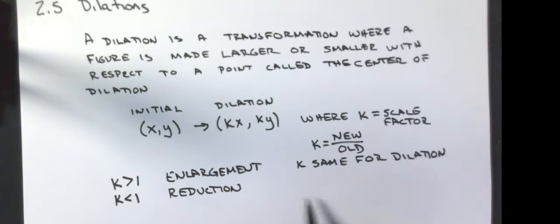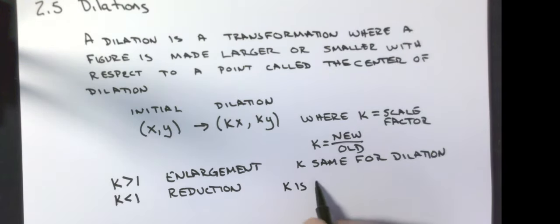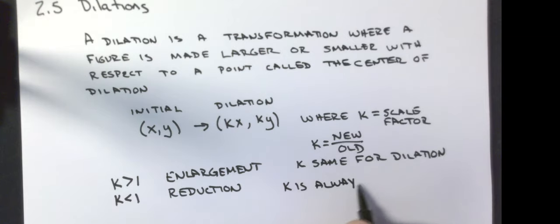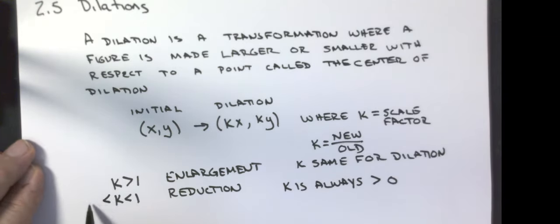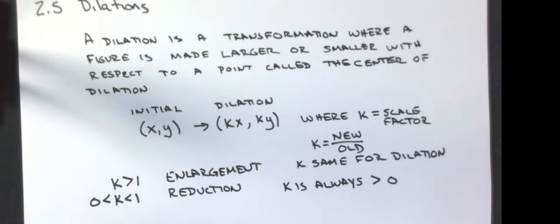K is always greater than zero. K's are always positive — we never have negative scale factors for what we are doing.